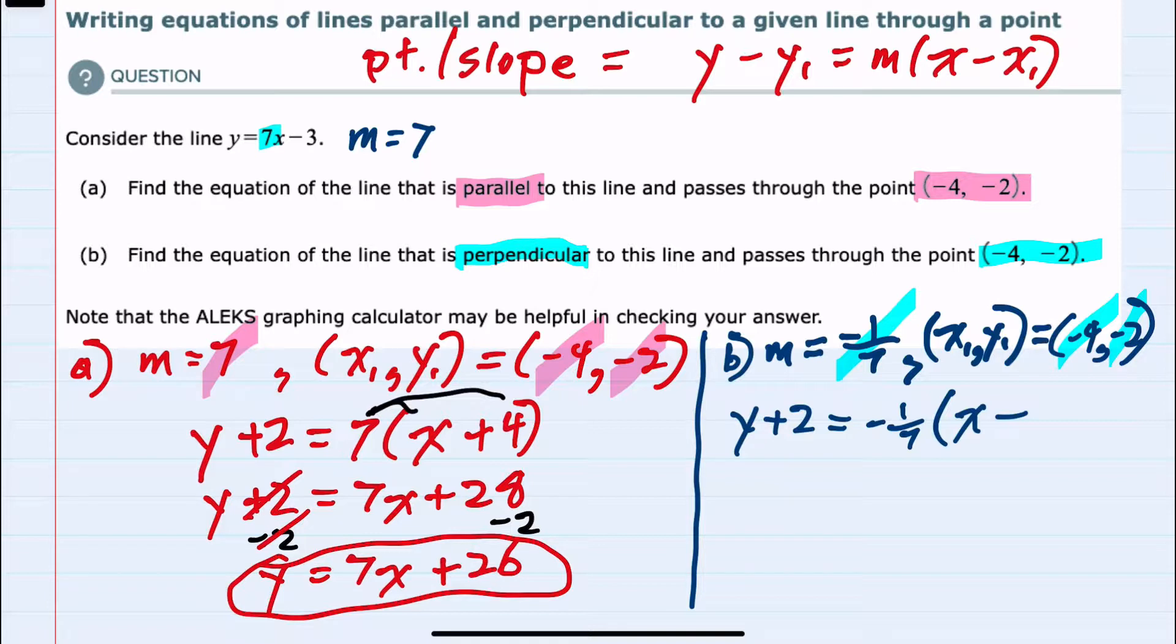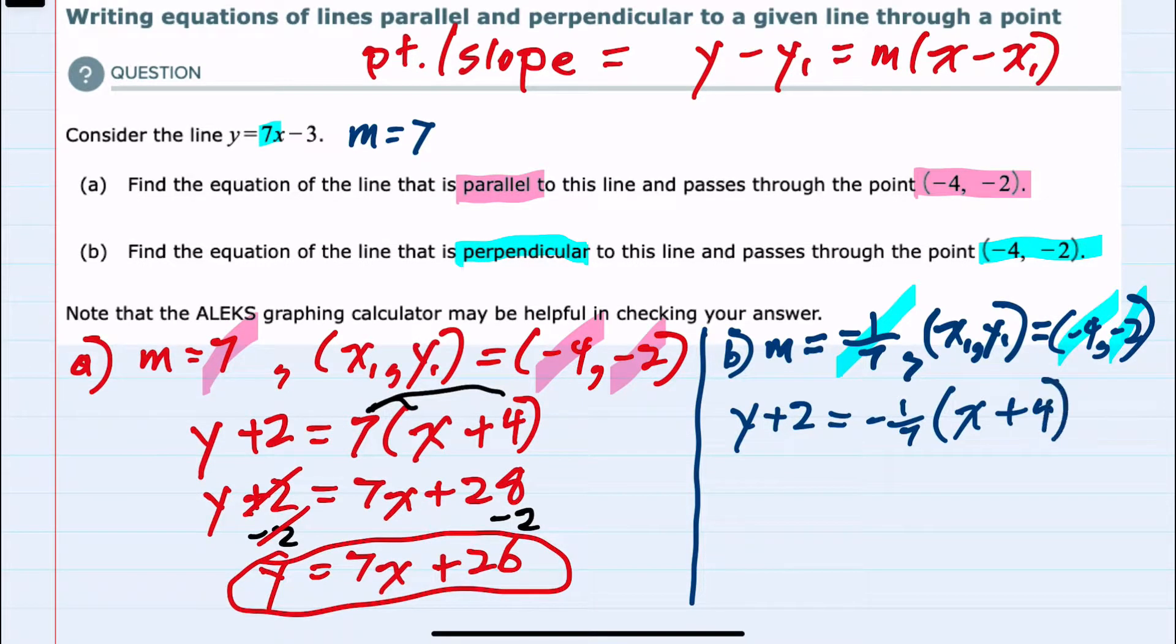I'll clean this up to simplify by first distributing this negative 1/7, so y plus 2 equals negative 1/7 times x, and then negative 1/7 times 4.